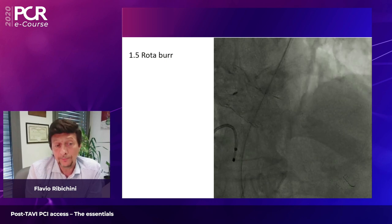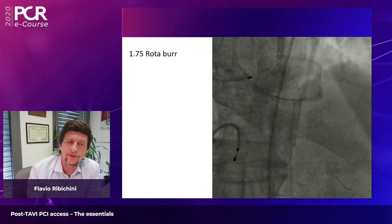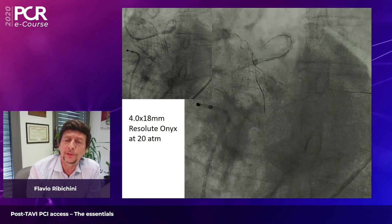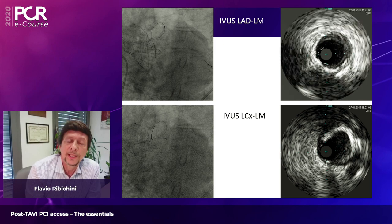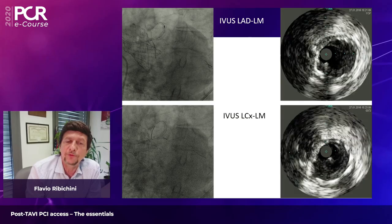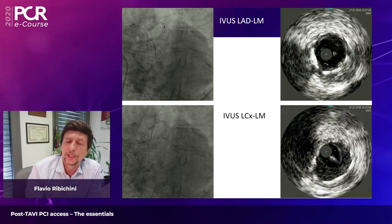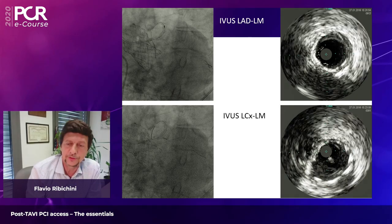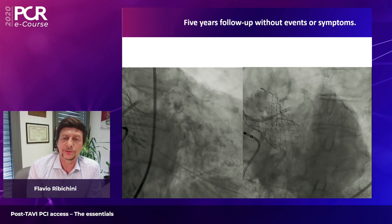Then the rest is a regular PCI — a complex case with a lot of calcium on the left main. We decided to do first rotational atherectomy with a 1.5 burr, upgrading to a 1.75, then pre-dilation with a non-compliant balloon and implantation of a Resolute Onyx stent using provisional stenting technique, a single stent from the left main to the LAD. IVUS pullback confirmed good stent expansion with a good result at the ostium of the proximal circumflex. This gentleman had more than five years of follow-up without symptoms or events.